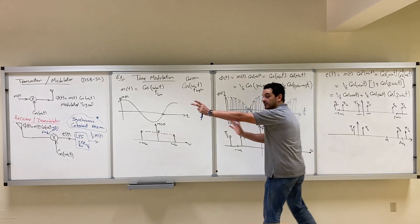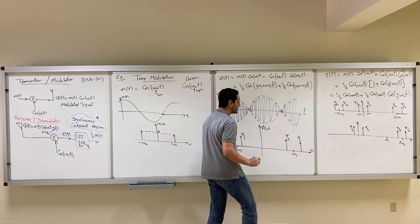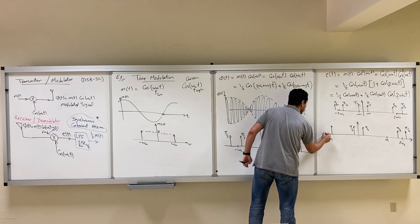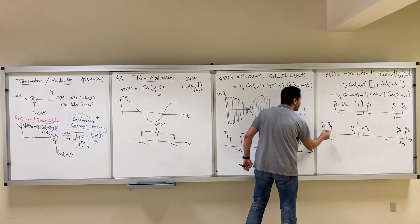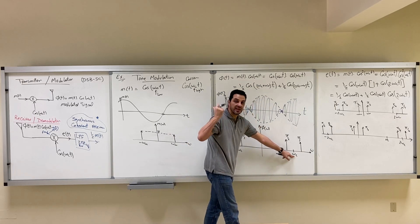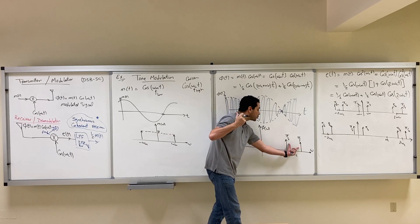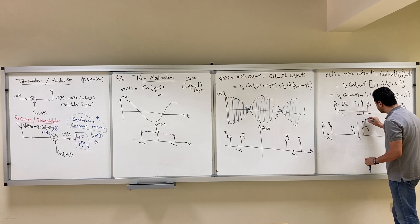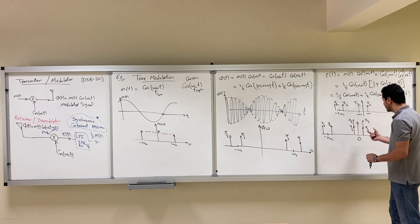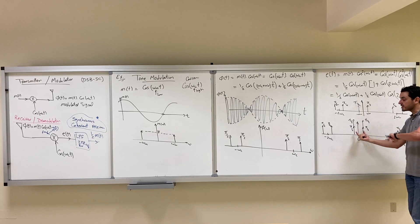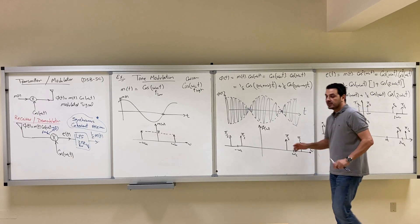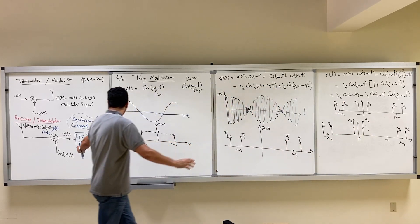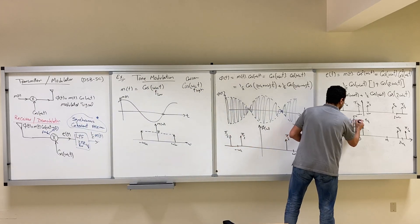Now shifting the whole spectrum left by omega_C: the component at negative omega_C becomes negative 2·omega_C, giving two deltas at pi/4. The component at omega_C shifts left by omega_C to become zero, giving two more deltas around zero. These two sets of deltas at zero add together, so pi/4 + pi/4 = pi/2. This is the spectrum E(omega) after multiplication by cosine at the receiver.